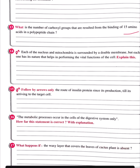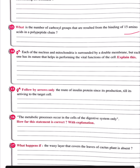Question number 14: Both the nucleus and mitochondria are surrounded by a double membrane, but each has its own nature that helps perform vital functions. The nuclear envelope has pores for RNA to exit and facilitate protein synthesis. The mitochondria has two membranes — the inner membrane is folded into cristae, which increases the surface area for cellular respiration reactions.